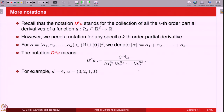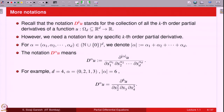Let us see an example. Assume d = 4, so the independent variables are x₁, x₂, x₃, x₄. Let alpha = (0, 2, 1, 3). Then D^alpha u tells us: do not differentiate with respect to x₁; differentiate 2 times with respect to x₂; differentiate 1 time with respect to x₃; and differentiate 3 times with respect to x₄. The sum of entries is 0+2+1+3 = 6, so this is a sixth order partial derivative. Thus D^alpha u = ∂⁶u / (∂x₂² ∂x₃ ∂x₄³).